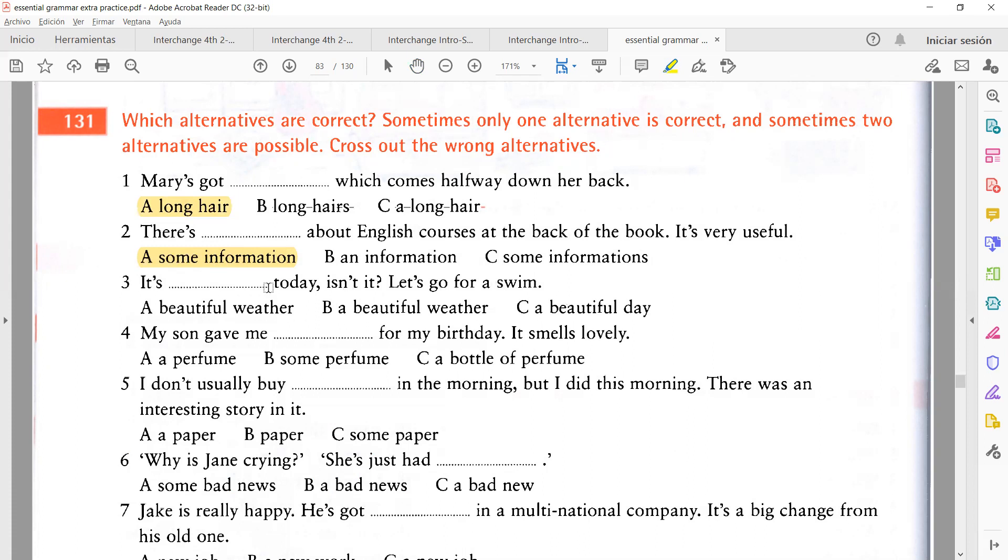No. A ver por qué no? Tú votas por esta? Una información, dos informaciones, tres informaciones? No se cuenta, information es incontable. Pero acuérdate que va con ambos, algo de información. Y si es contable, algunas informaciones, pero esta estaría mal porque no se cuenta información. Número tres, it's bla bla bla today isn't it, let's go for a swim. Es bla bla bla hoy o no, vamos a nadar.